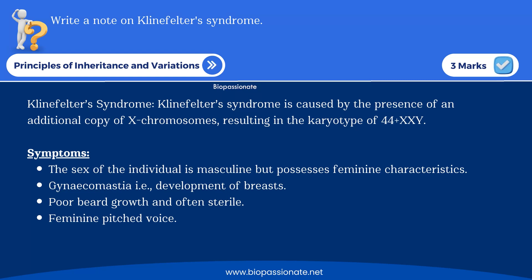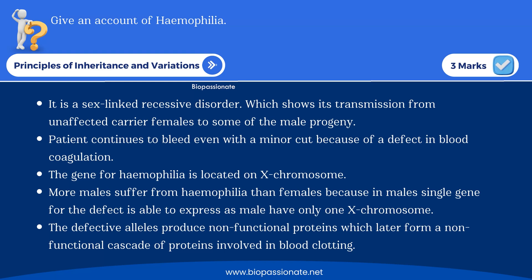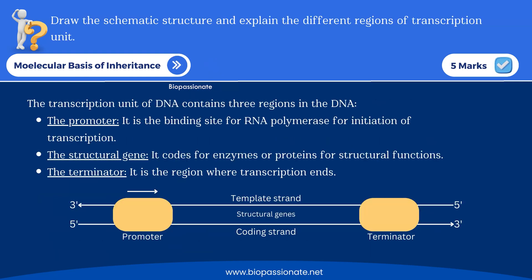The same type of question repeats for different chromosomal disorders: Down syndrome and Turner syndrome. Give an account of hemophilia — it is a sex-linked recessive disorder. Out of the Mendelian disorders, hemophilia and colorblindness are very important. Another diagram-based question for five marks is also asked in this chapter.